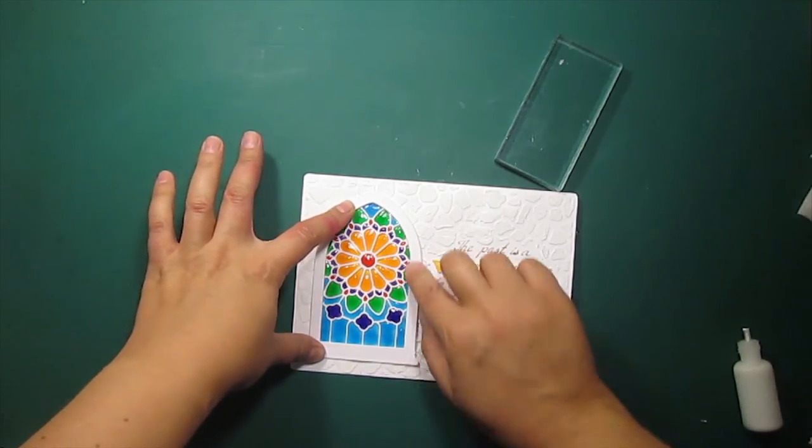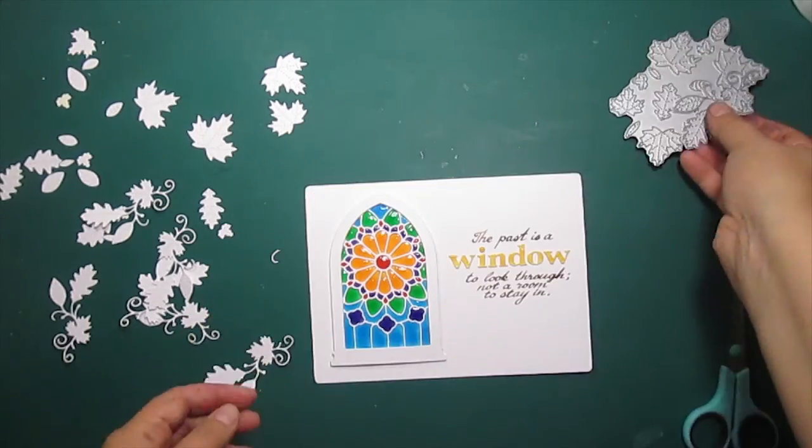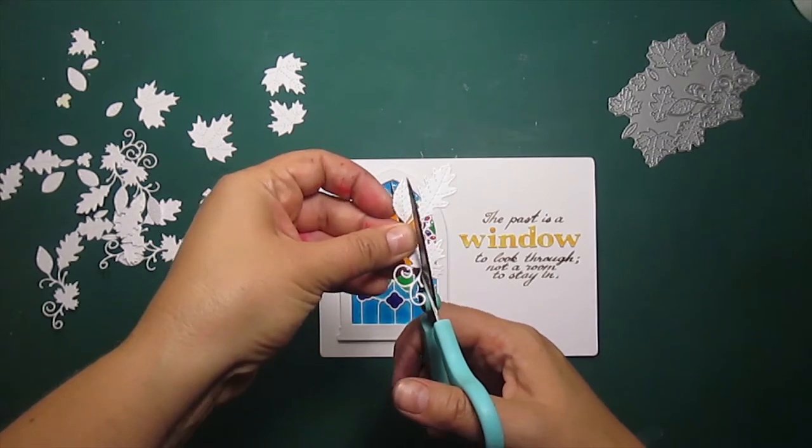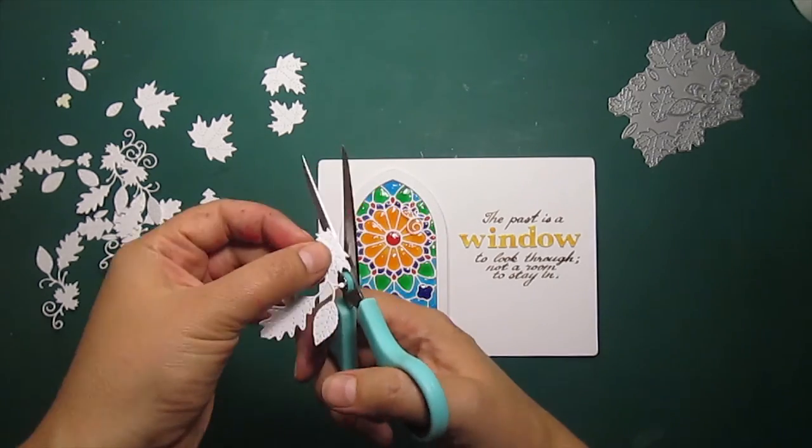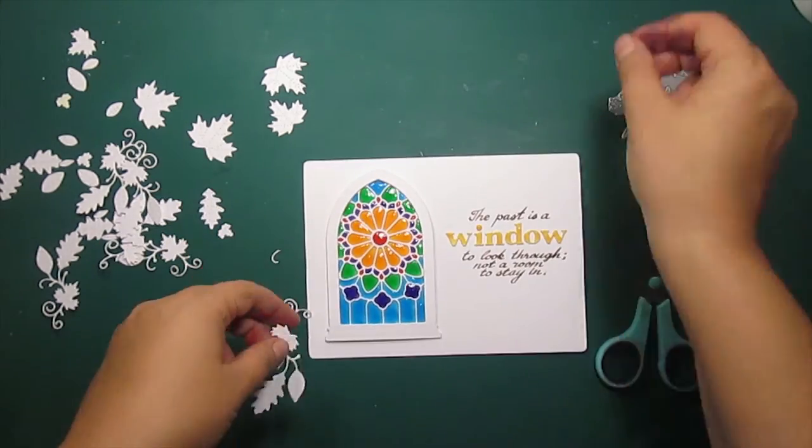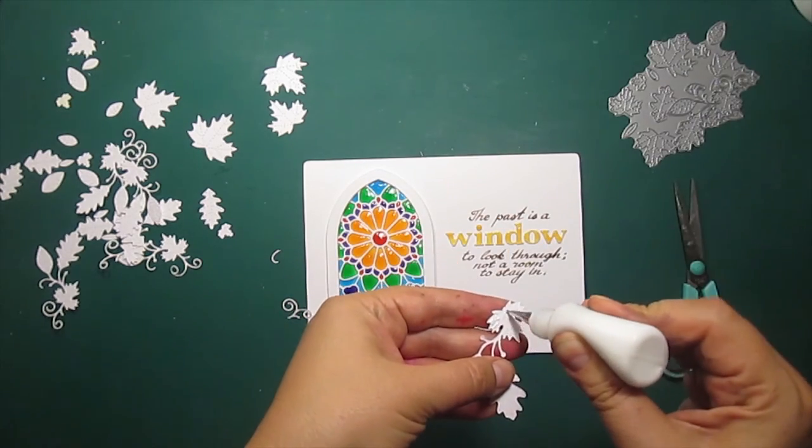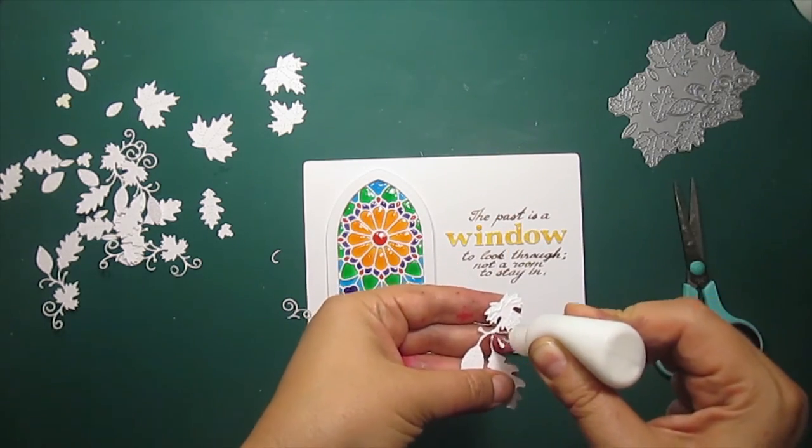This wild stone texture at the background that you probably have noticed is actually an unsuccessful experiment. I didn't like how it turned out, so I moved all the elements to a new card base and this time I am going to adhere some stitched leaf die cuts to create a textured background.